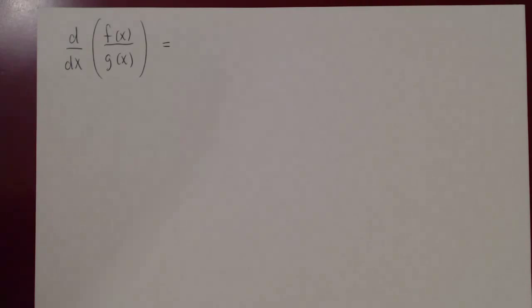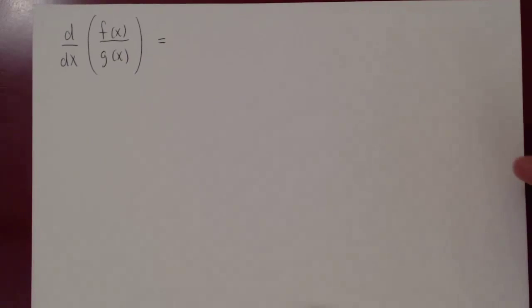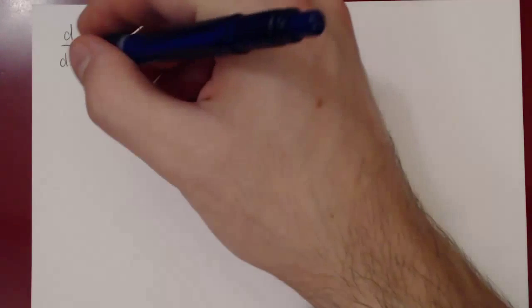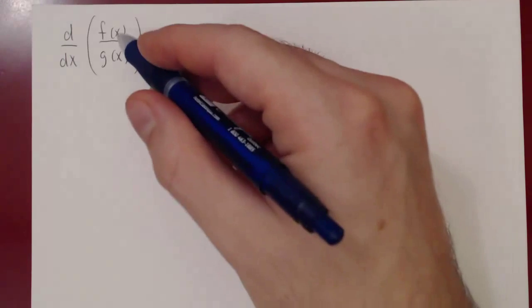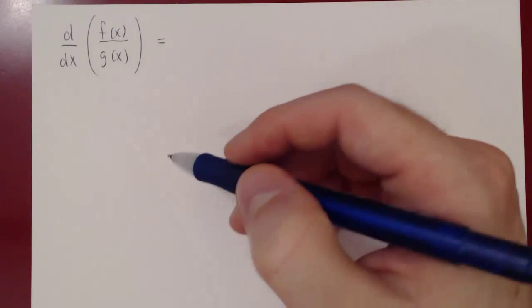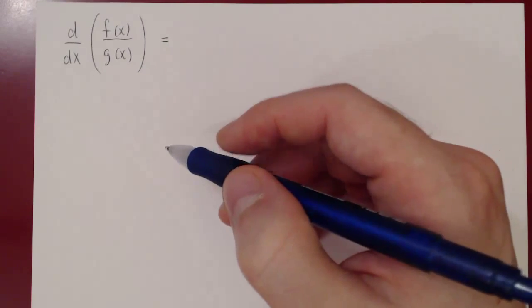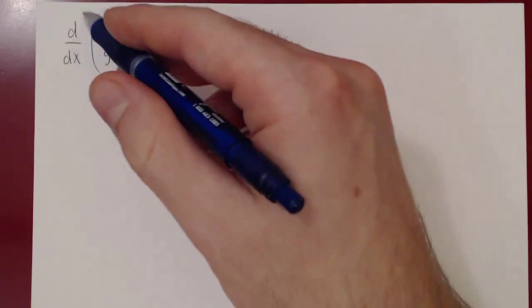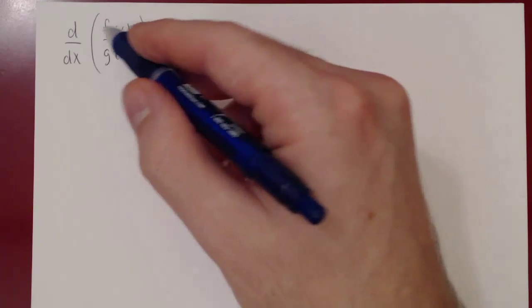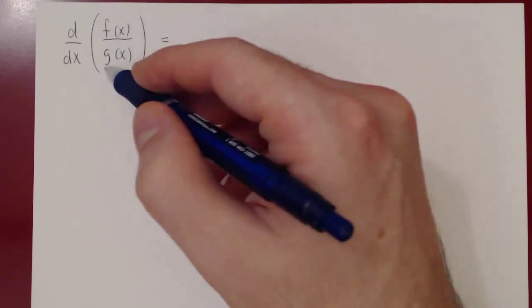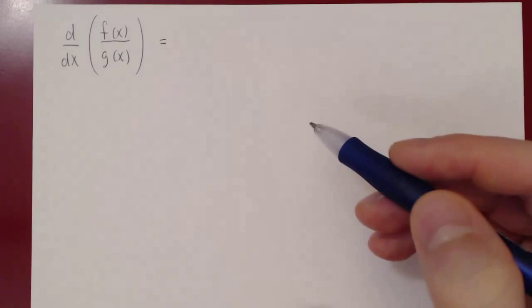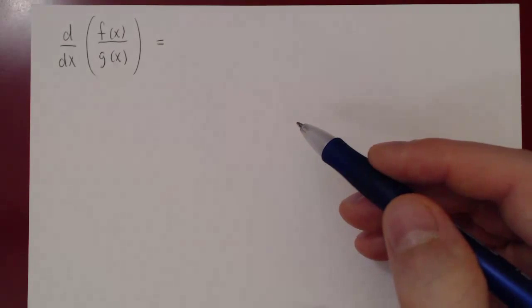In this video we will look at the quotient rule — that is, how to differentiate a quotient of two functions. So how do we find the derivative of f(x) over g(x)?